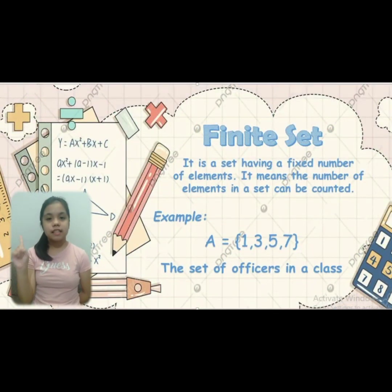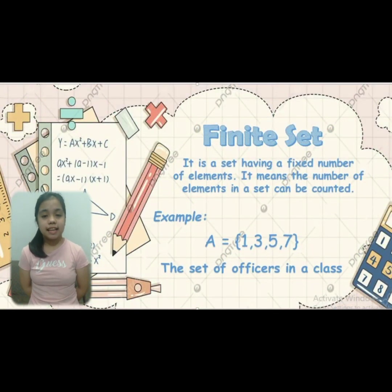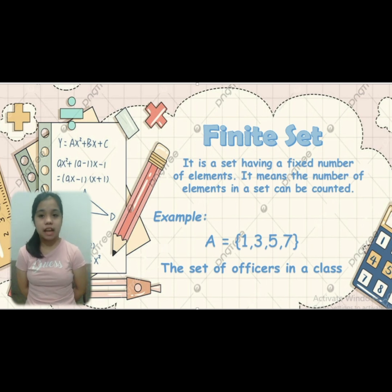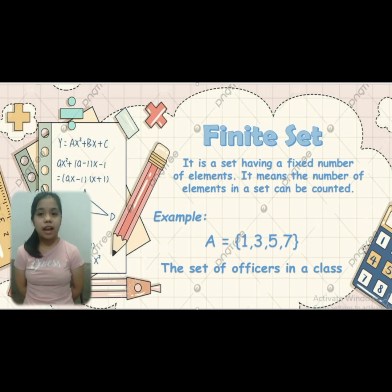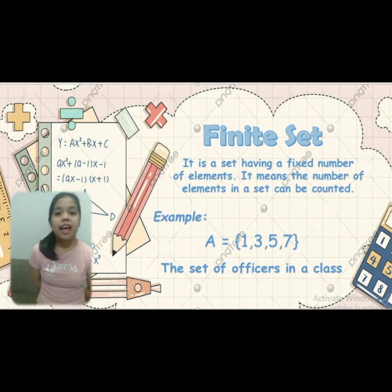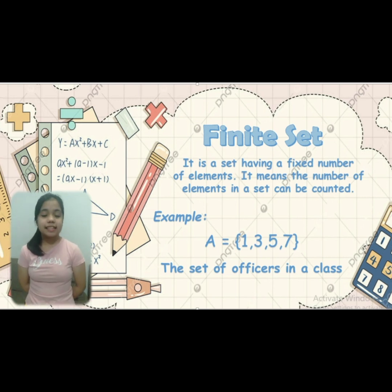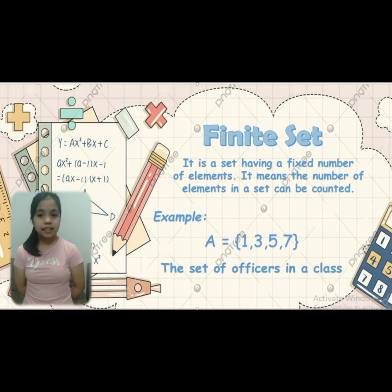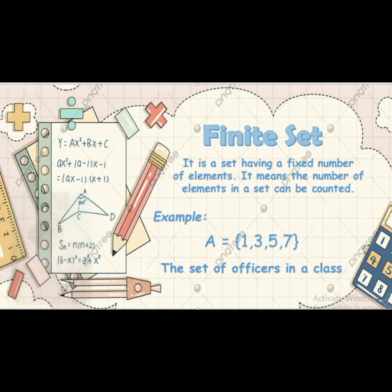The first type of set is the finite set. It is a set having a fixed number of elements, meaning the number of elements in a set can be counted. For example, A equals {1, 3, 5, 7}. Another example is the set of officers in a class.